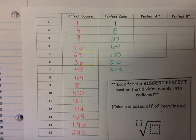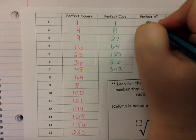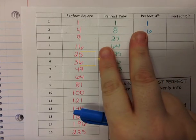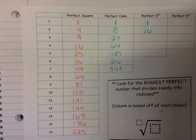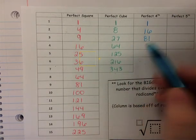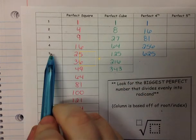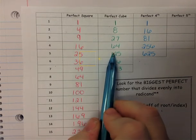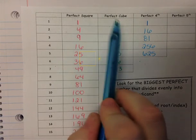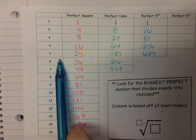Now if we continue with the perfect fourths: 1 to the fourth power is 1 times 1 times 1 times 1, which is still just 1. 2 to the fourth power is 16, because that's 2 times 2 times 2 times 2. 3 to the fourth power is 81. 4 to the fourth power is 256. And 5 to the fourth power is 625. These build on each other — for example, 2 times 2 is 4, times 2 is 8, times 2 is 16. We're just multiplying one additional time with each successive power.